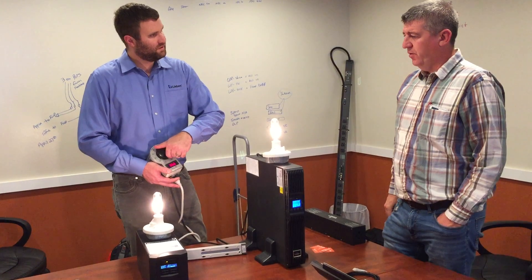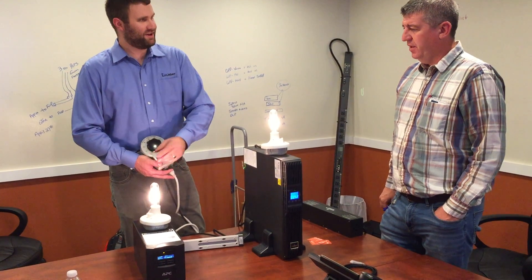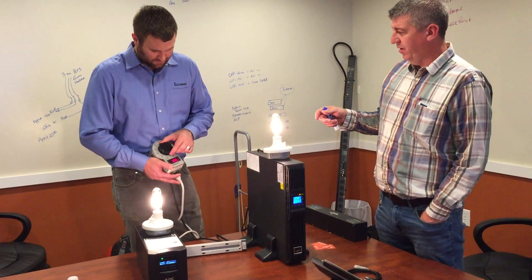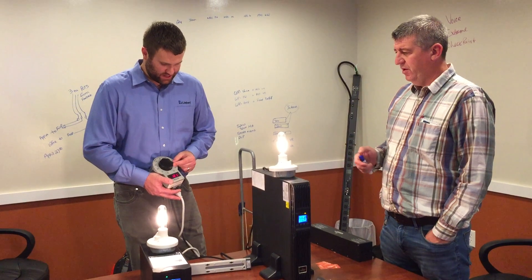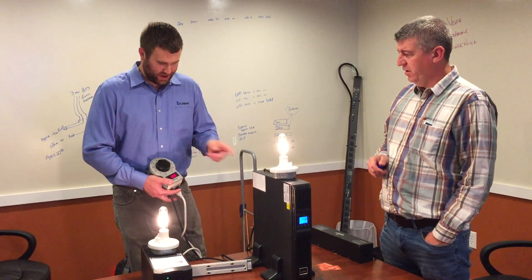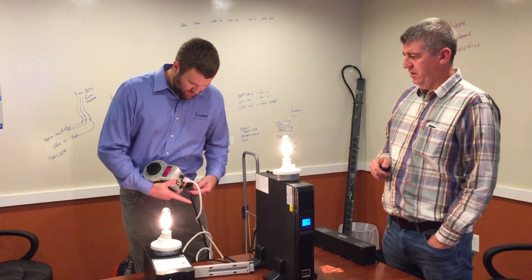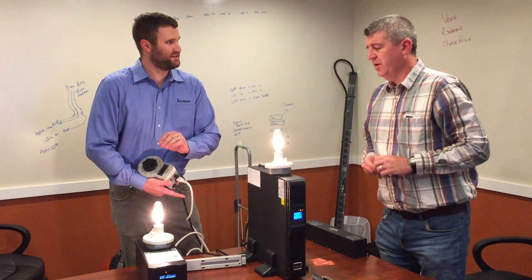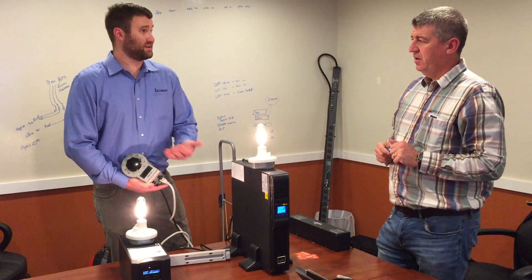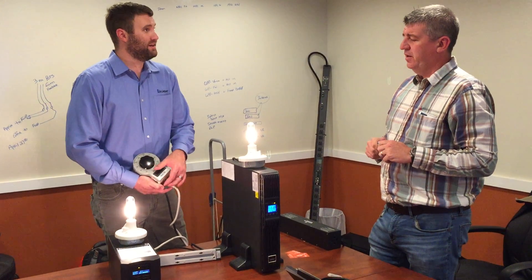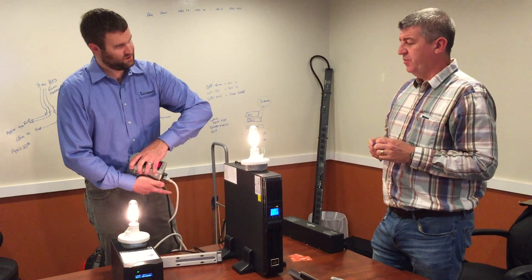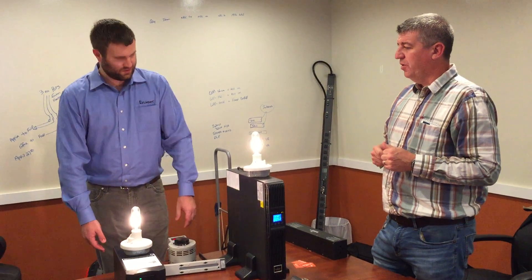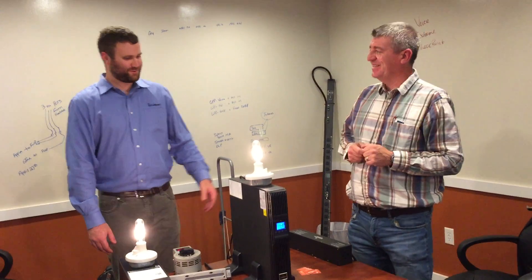If we drop it all the way down, you see a transition on the line interactive side — the light bulb changes — while the double conversion side shows nothing. Going back up to 120 and then killing power, both come back online. Dropping it again, there was a brief transition on the sensitive side. Really sensitive electronics can actually feel that, which in our corner of the world is pretty typical — there are power events, storms, and so on. That's it — very straightforward.